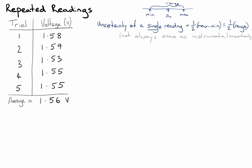So if you go back and look at our data here, the range of our data, the maximum minus the minimum, is 1.59 minus 1.53, which is 0.06 volts. I'm going to take that number and put it up here.